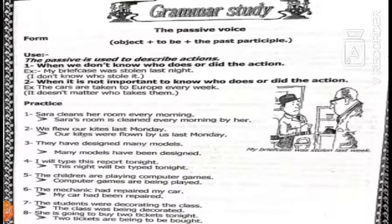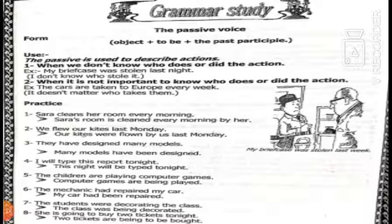Now let's move to the passive voice. The form of the passive voice is: object + to be + past participle. We use the passive to describe actions when we don't know who does or did the action — for example, 'my briefcase was stolen last night' — I don't know who stole it. Also when it's not important to know who does the action — for example, 'the cars are taken to Europe every week' — it doesn't matter who takes them.